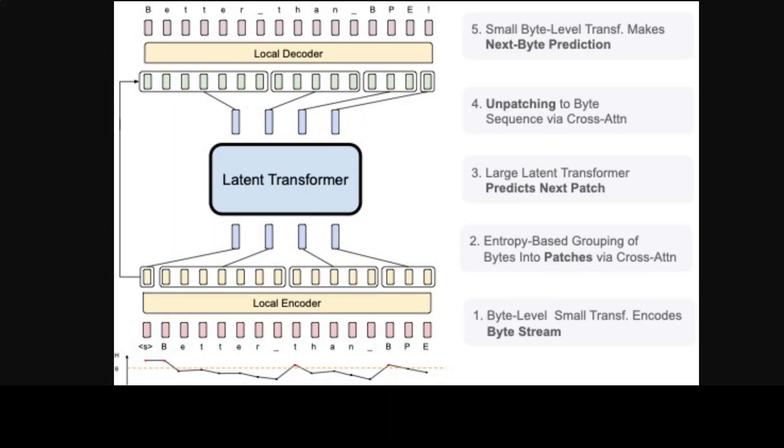If you look at the architectural diagram of BLT, it is a new model by Meta designed to work directly with raw bytes of data without the need for tokenization. BLT uses a dynamic and learnable method to group bytes into patches. It then uses a combination of small local models and a large global model to process these patches.